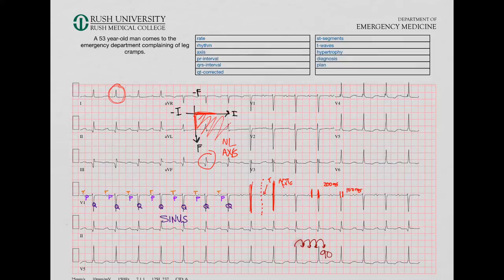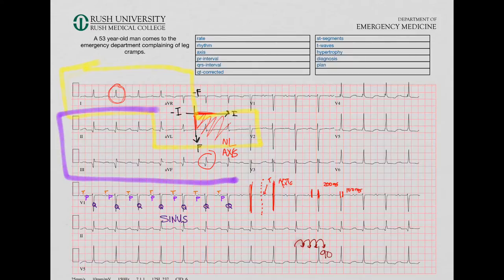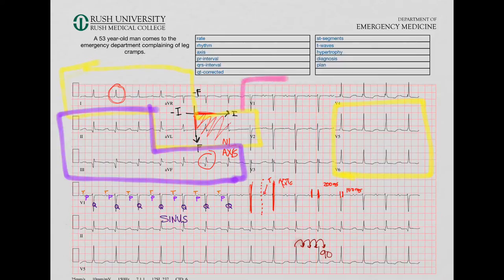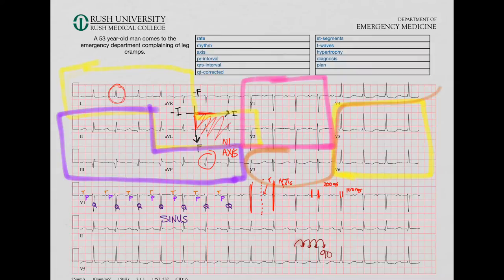Now let's look at the ST segments. First, our high lateral leads — leads 1 and AVL — the ST segments and T waves look great. Our inferior leads — 2, 3, and F — the ST segments and T waves look normal: T waves upright, ST segments flat. The lateral leads V5 and V6 also look fine. The septal leads look fine, and the anterior leads also look fine. So our ST segments and T waves look good.